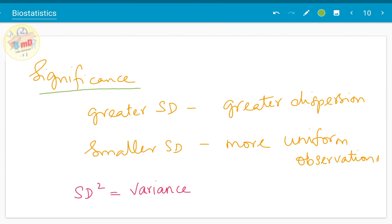What is the significance of standard deviation? Greater standard deviation means there is greater dispersion—the observations are located far from the central value. Smaller standard deviation means all the observations are more of uniform value. Standard deviation squared is known as variance. These are the basic concepts you need to know about measures of dispersion as far as dentistry is considered.